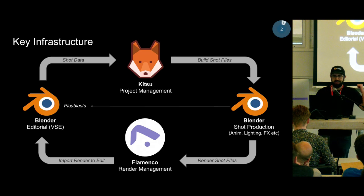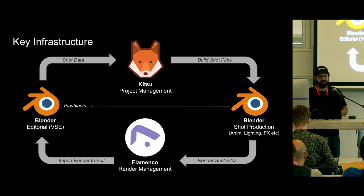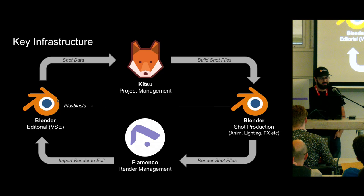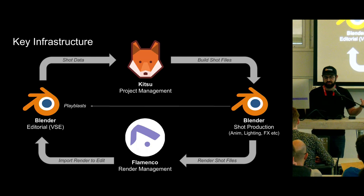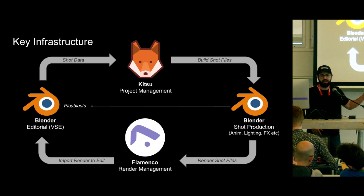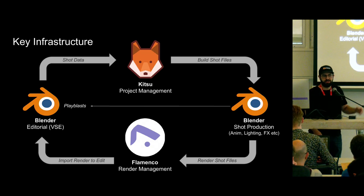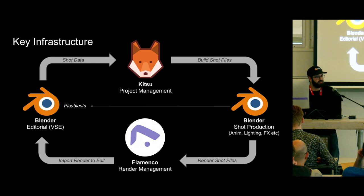This is a very simple diagram that explains what we're going to be covering today. Pipeline means a lot of things to a lot of different people, but in this talk we're going to be focusing on the editorial to animation and back workflow. Starting on the left of this diagram, we have Blender containing a video editing sequence — you can imagine some sort of storyboard or previs video assembled inside a video sequence editor. From there, we're able to upload our shot data to Kitsu. Kitsu is a project management software we use to assign tasks to different artists. It is also open source — you can self-host it. It's made by the guys at CGWire.